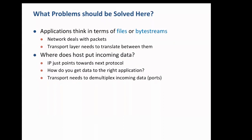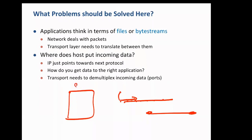Applications normally don't think in terms of packets. An application says: I have a byte stream to communicate — for example a movie is just a sequence of bytes, and the other end should receive and play it. Or an application may think: I have a file to send. There must be some layer that converts that byte stream into packets and does further processing on top of that.